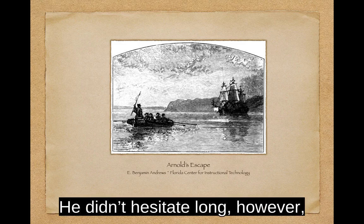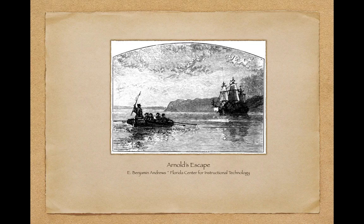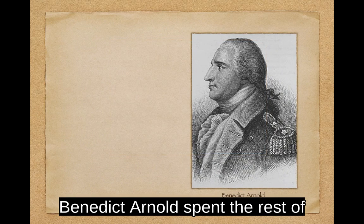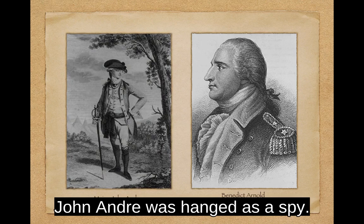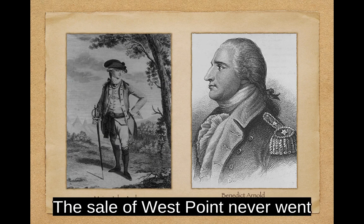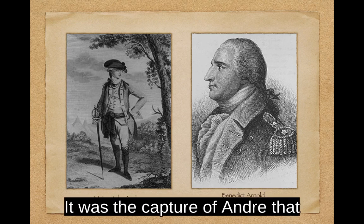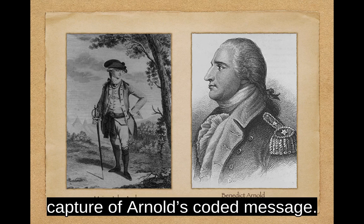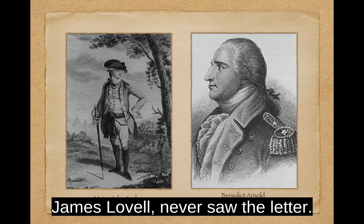Washington didn't hesitate long, however, and quickly sent Alexander Hamilton to catch up with Arnold. But Arnold was already safely aboard the HMS Vulture. Benedict Arnold spent the rest of the war fighting on the side of the British. John Andre was hanged as a spy. The sale of West Point never went through, and it stayed in Patriot hands. It was the capture of Andre that alerted the Americans to Arnold's traitorous actions, not the capture of Arnold's coded message. Washington and his codebreaker, James Lovell, never saw the letter.